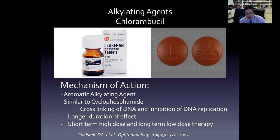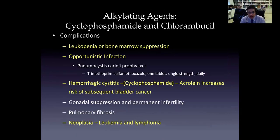Chlorambucil is another alkylating agent that causes cross-linking of DNA and inhibition of DNA replication, but with a longer duration of effect. Short-term high-dose therapy or long-term low-dose therapy can be utilized, and there is significant information on the utilization of short-term high-dose therapy from Deborah Goldstein's group at University of Illinois/Northwestern University. Complications for these agents are severe. Opportunistic infections are quite common, so pneumocystis carinii prophylaxis is recommended. Hemorrhagic cystitis from cyclophosphamide due to acrolein can also increase the risk of bladder cancer. Leukopenia and bone marrow suppression are common. Pulmonary fibrosis, secondary leukemias and lymphomas, and permanent sterility can occur. Patients on these agents, especially men, should consider sperm banking.